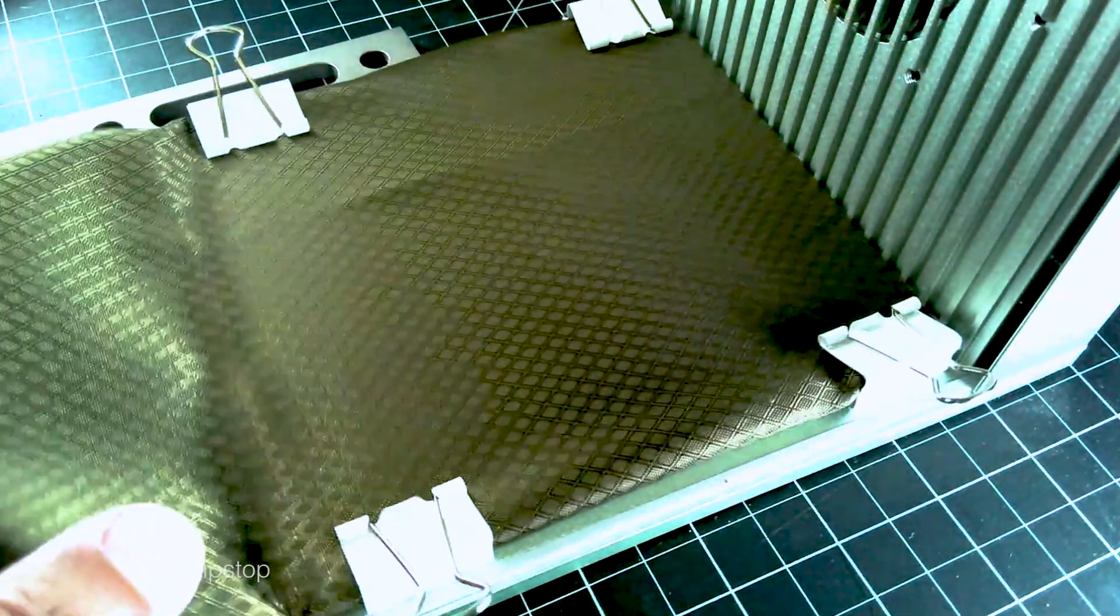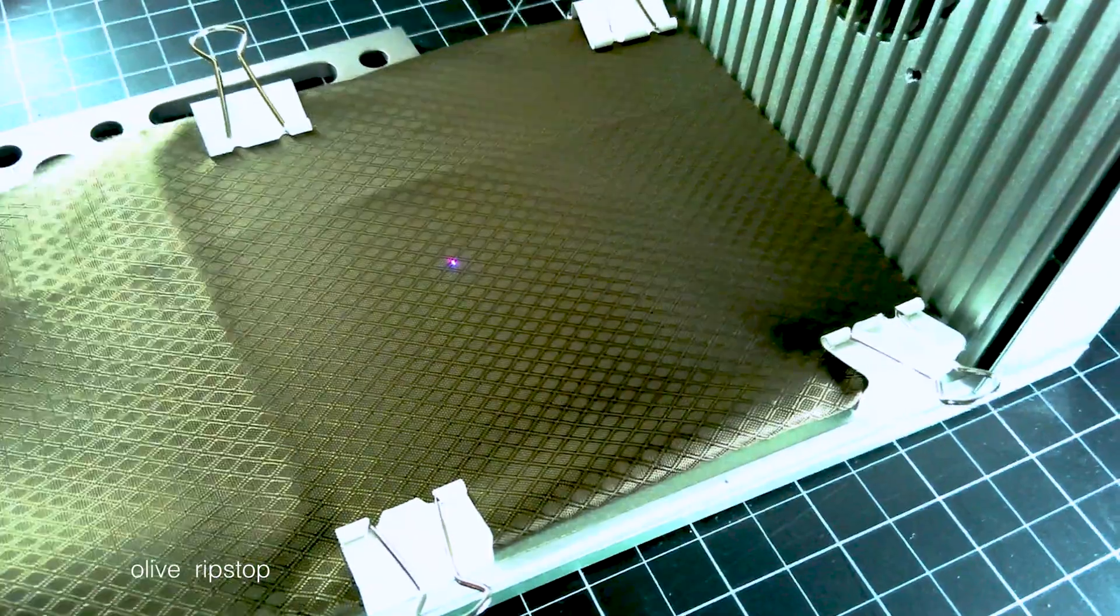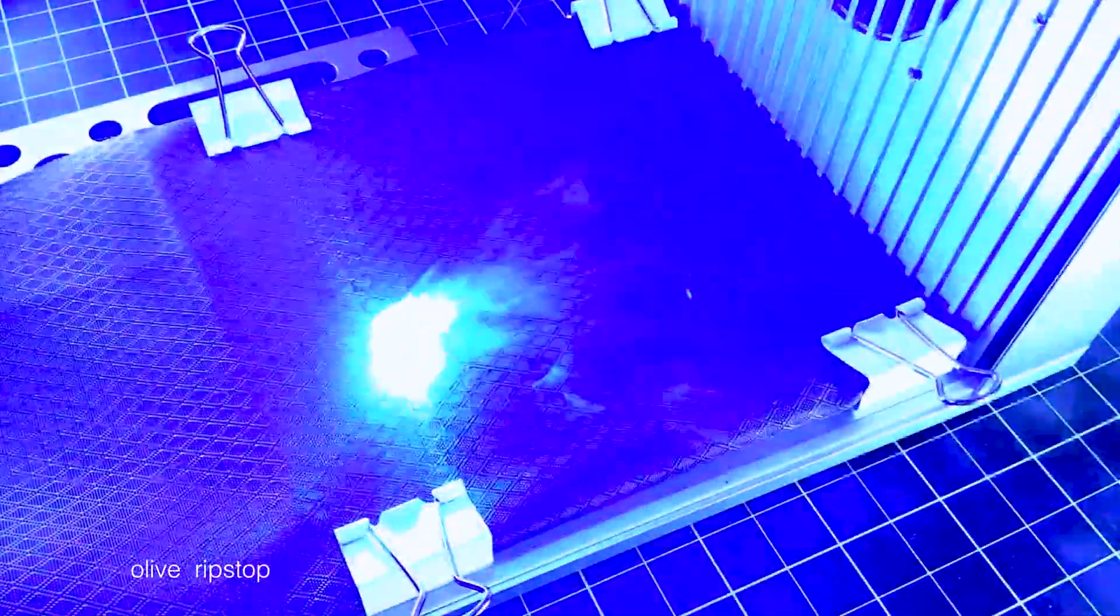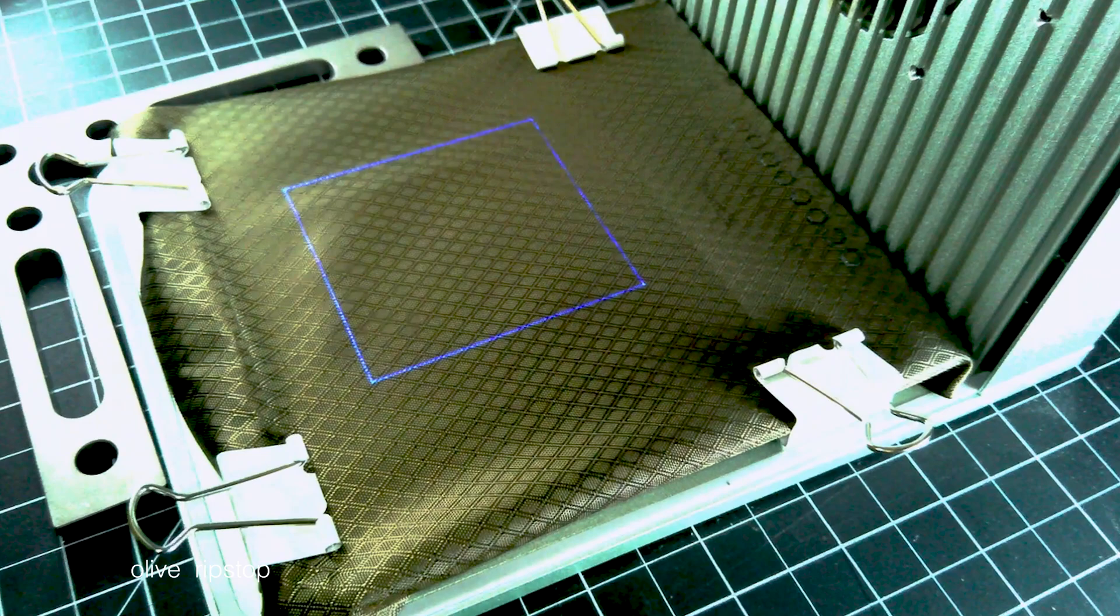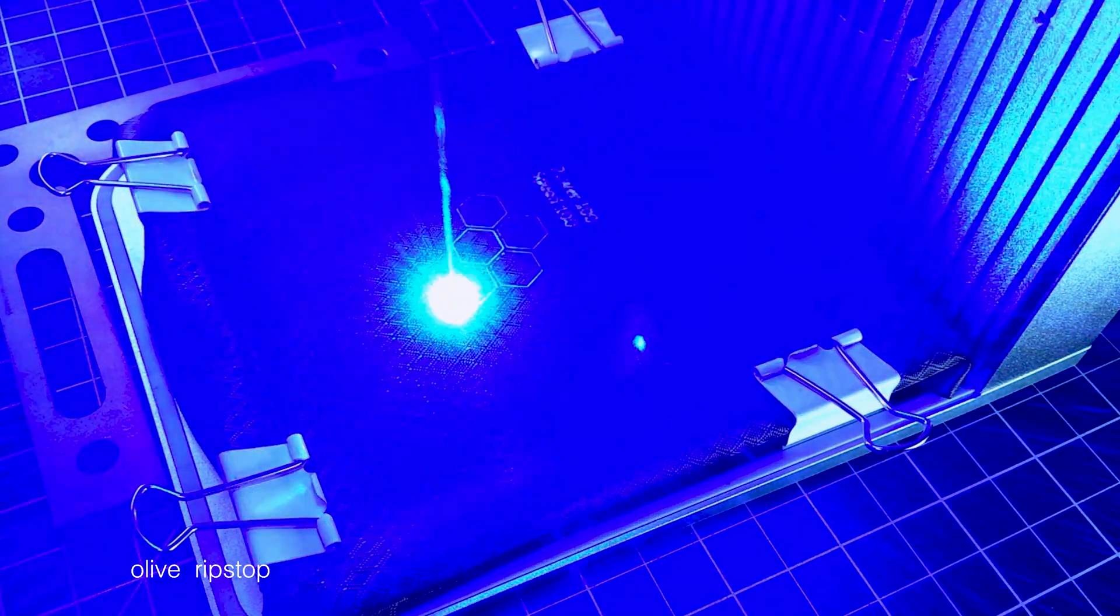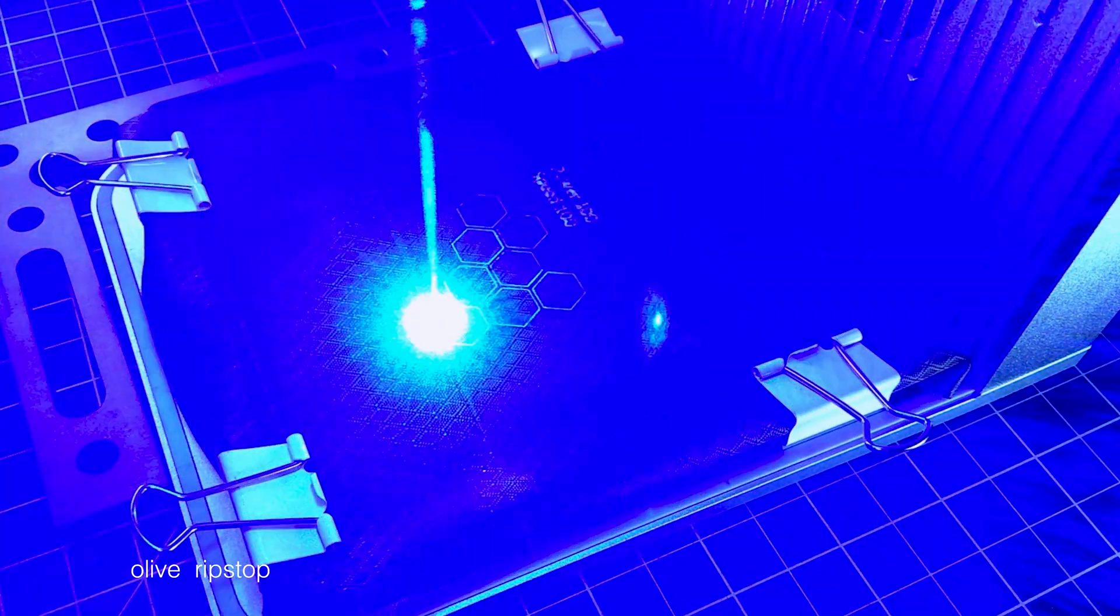We found that the olive colored ripstop ballistic nylon predictably tended to melt. Lower power and faster speed settings visibly scored the material, but didn't seem to weaken the material enough to cause it to tear where the scoring was. When the power was set high enough and the movement slow enough to cut, the material tended not only to melt but also to smoke and scorch.